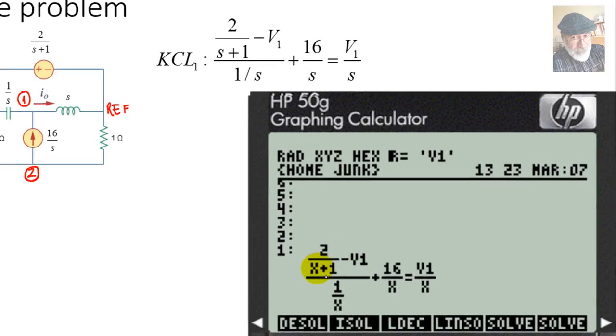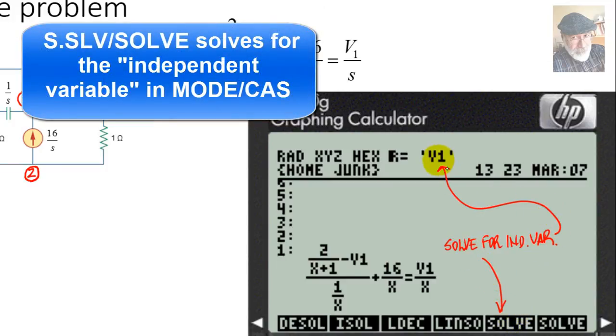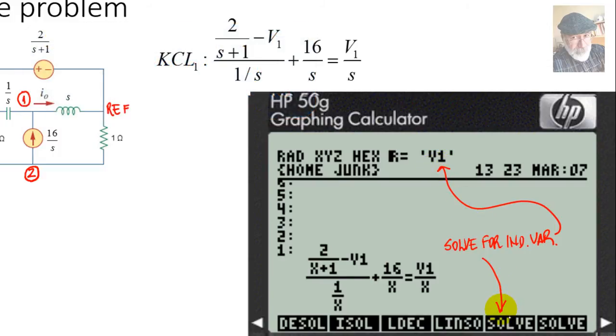We go into the equation writer, write our KCL equation. Who is this x? X represents the s variable. Why? Because x is the letter of the alphabet that is the easiest to type on the HP50G. So I'll use x instead of s. That is the equation. And now I go to the white shift symbolic solver, and this function here on F5, solve. Solve for whom? Solve for the independent variable that is active at the moment, and we've made that V1. If I click solve x, I'll get that.